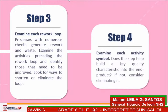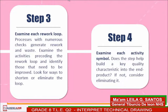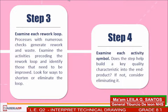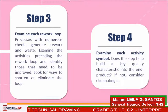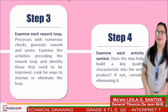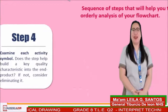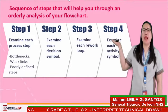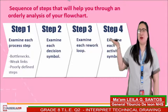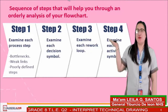Step 4: Examine each activity symbol. Does the step help build a key quality characteristic into the end product? If not, consider eliminating it. These are the sequence of steps that will help you through an orderly analysis of your flowchart.